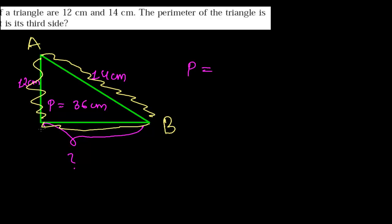B and C. So the perimeter will be AB plus BC plus AC.